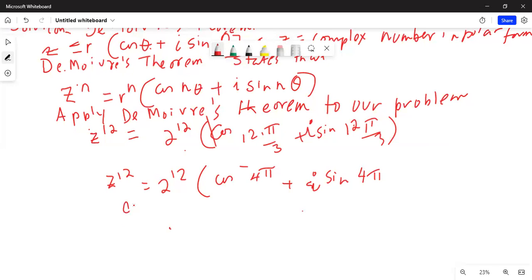Cosine of 4 pi is equal to cosine of 0, which equals 1. Similarly, sine of 4 pi equals sine of 0 degrees, which is 0.